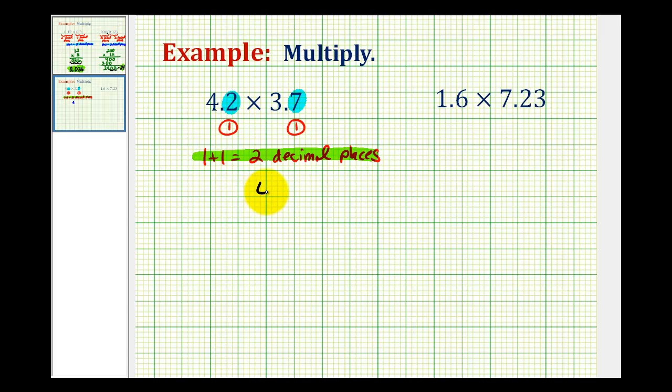So now we'll determine the product of forty-two and thirty-seven. So seven times two is fourteen, carry the one. Seven times four is twenty-eight, plus one, that's twenty-nine.